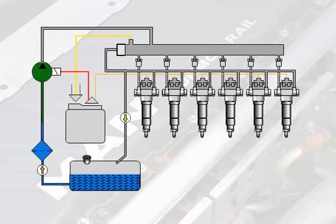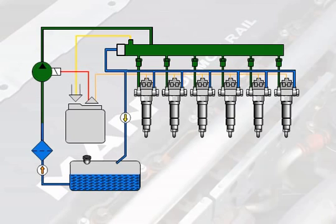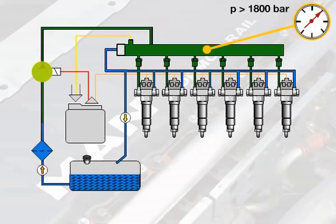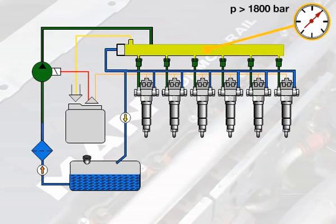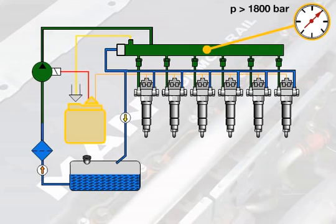In engines with common rail fuel injection system, the injection pressure is built up independently from the load and engine speed. The single-stage high-pressure pump generates a pressure of over 1,800 bar, which is available to each injection nozzle on a common distribution rail. The start of injection and injection time are set by the EDC control unit by means of electrically actuated solenoid valves.